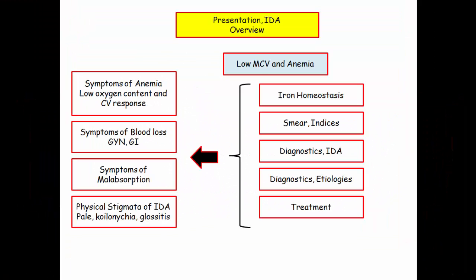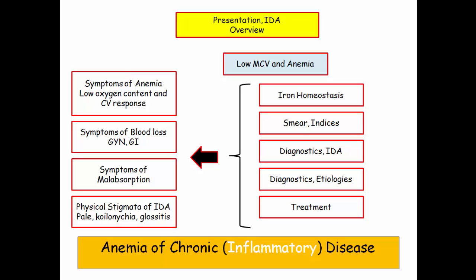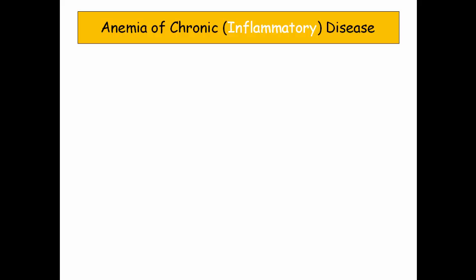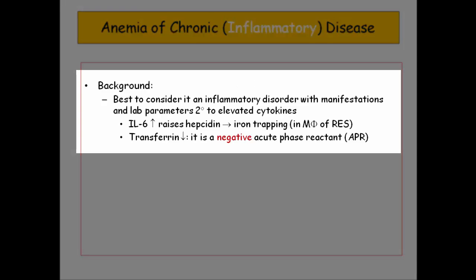So that's iron deficiency anemia. As with other sections, there are only a finite number of ways they can come after you. Let's forge ahead and finish up with anemia of chronic disease. This is the one they like to trip you up with when compared with iron deficiency anemia. Calling it anemia of chronic inflammatory disease is more useful — if you get the notion of inflammatory cytokines mediating this anemia, everything will make perfect sense. The lab findings are all related to cytokine release.